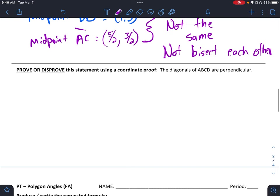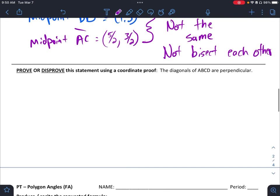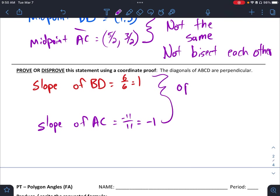Next one says prove or disprove that the diagonals are perpendicular. So here I am not going to zoom out here, but you are finding the slope of B, D, and you are finding the slope of A, C. And again, I am going to fast track this, but you should find the slope of this to be 6 over 6, which is 1. And the slope of this to be negative 11 over 11, which is negative 1. Since these are opposite reciprocals, then they are perpendicular.